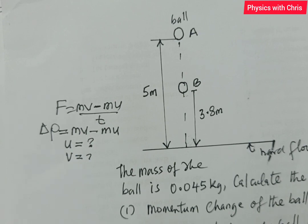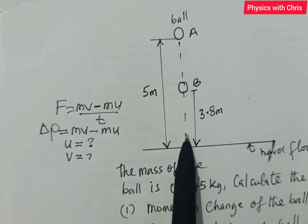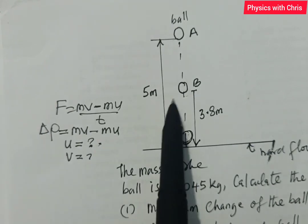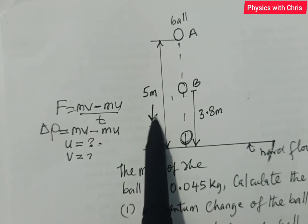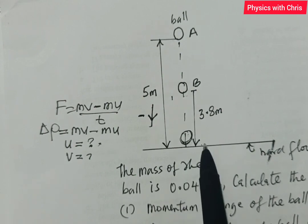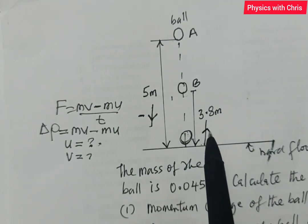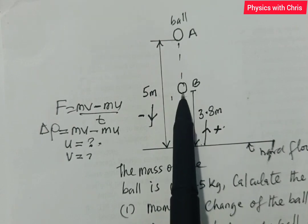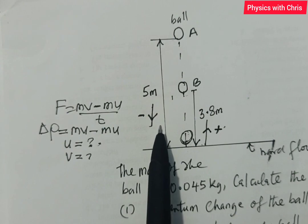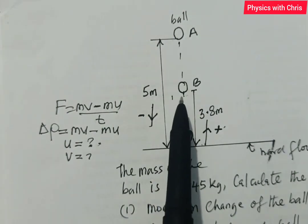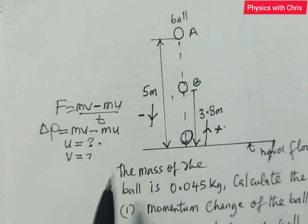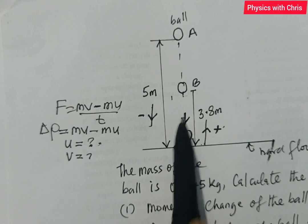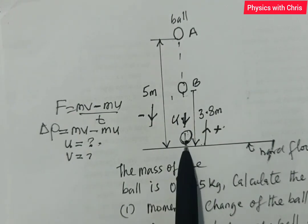Since the ball is dropped from rest at point A, the speed just before it hits the surface must be found — let's call that initial velocity u. I'll take the direction towards the surface as negative, and the upward rebound direction as positive — that will be my final velocity v. The ball rises to point B where it is momentarily at rest again, just as it was released from rest at point A. So at point A the initial velocity is zero, and just before it strikes the ground, the velocity is my u.